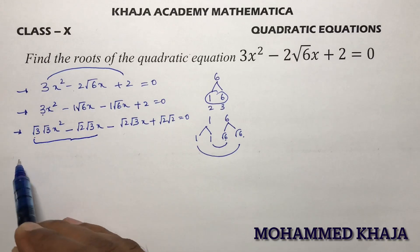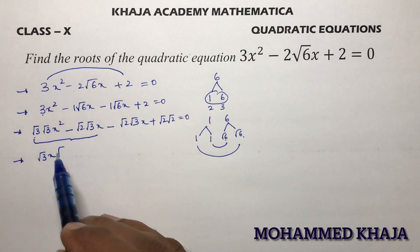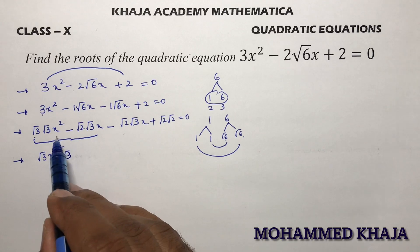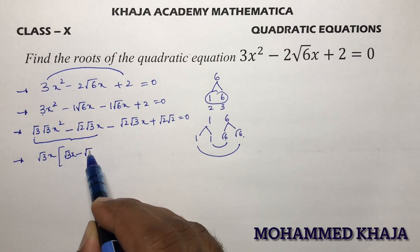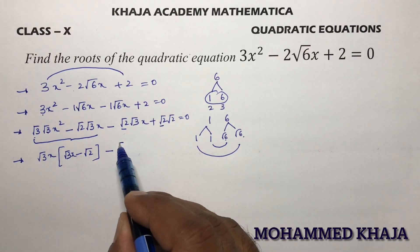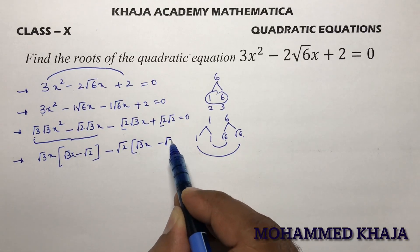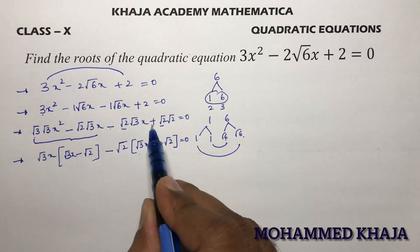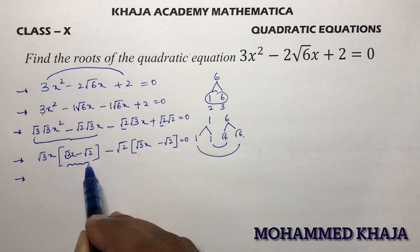Now it is clear what to take as common. In the first two terms, take √3x as common, leaving (√3x - √2). In the last two terms, take √2 as common — note the sign becomes plus — leaving (√3x - √2).